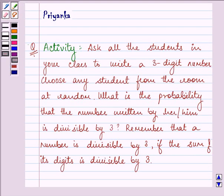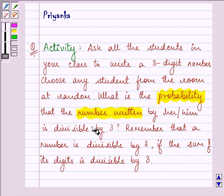Hello and how are you all doing today? The question says, this is an activity: ask all the students in your class to write a three digit number. Choose any student from the room at random. What is the probability that the number written by him or her is divisible by three?